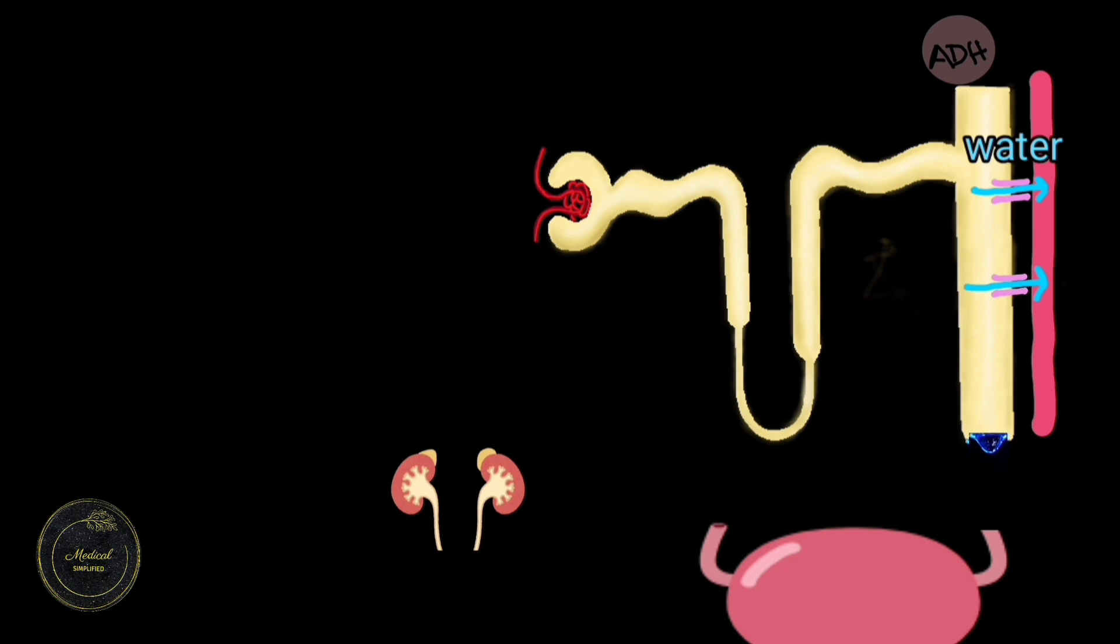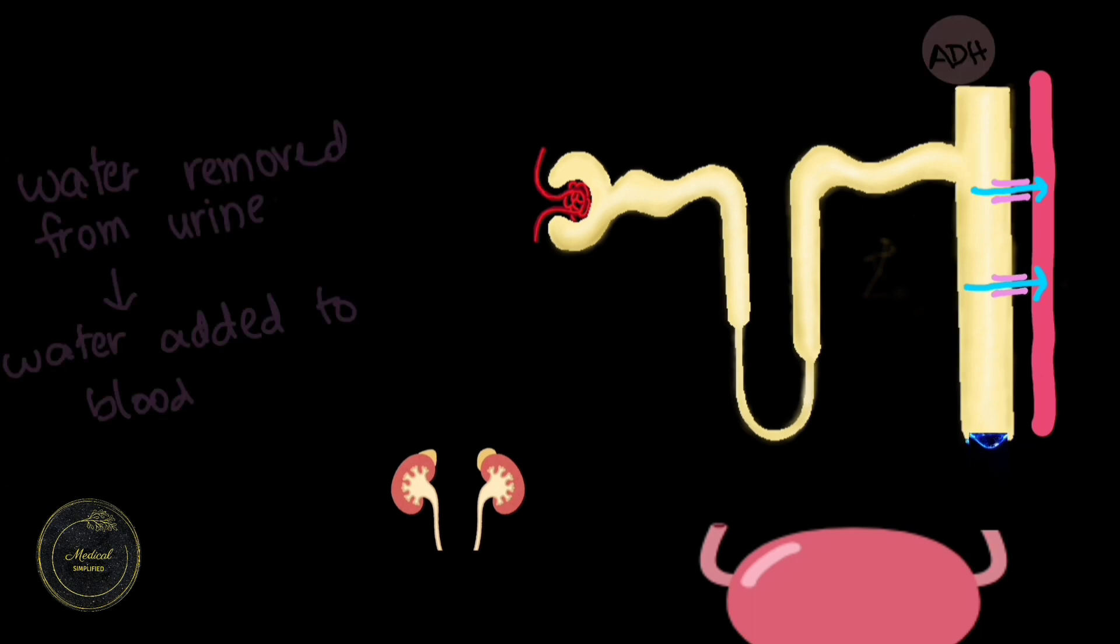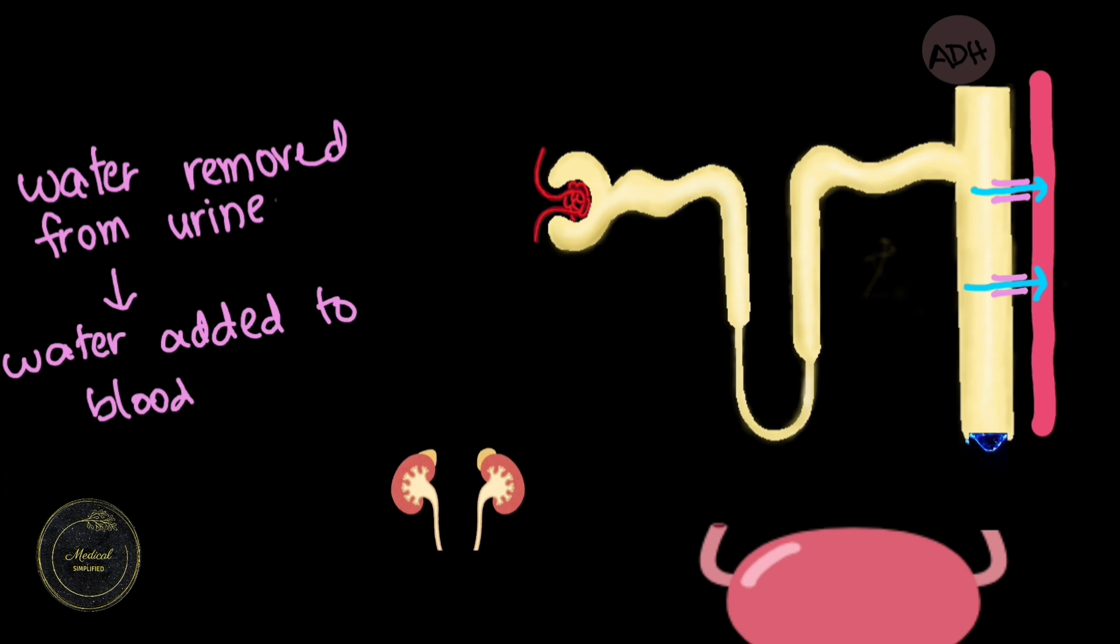So now let's see how the ADH is going to affect the osmolality of blood and urine. So as we saw, the ADH is causing the removal of water from the urine and adding it to the blood. So the urine becomes concentrated or there is an increase in osmolality as we saw earlier.